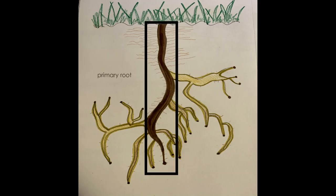The first one we're talking about is the primary root. The primary root is the largest part of the root. It's usually located below the main stem. It is the main path from the smaller roots to the stem and sometimes stores food for the plant. I have that highlighted in the dark brown color.